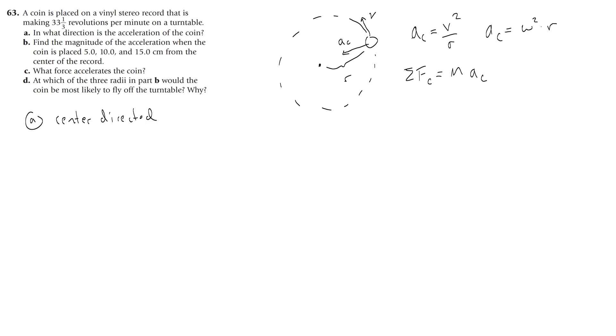So for B, find the magnitude of the acceleration when the coin is placed at those different radii. First of all, you would need to convert those different radiuses into meters instead of centimeters.